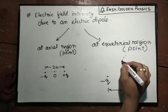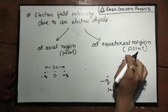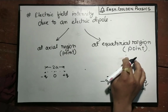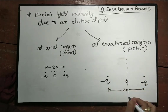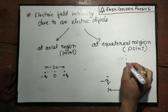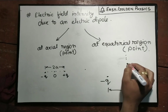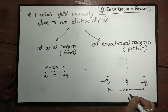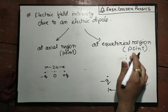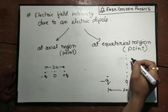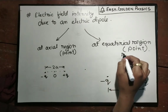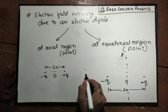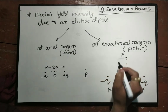The equatorial region is perpendicular to the axis. Any point on the equatorial side is called the equatorial point.